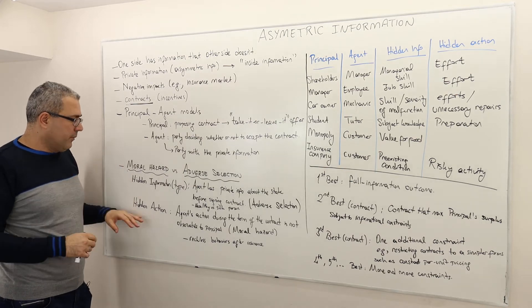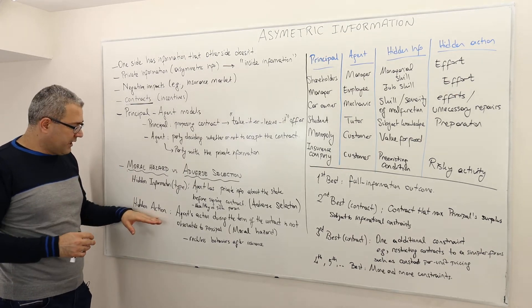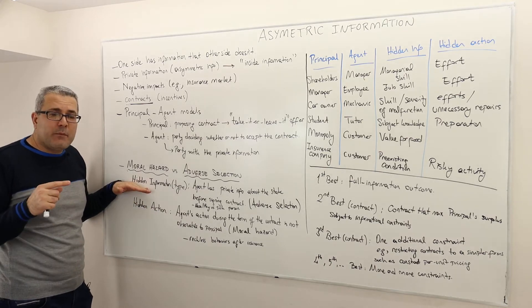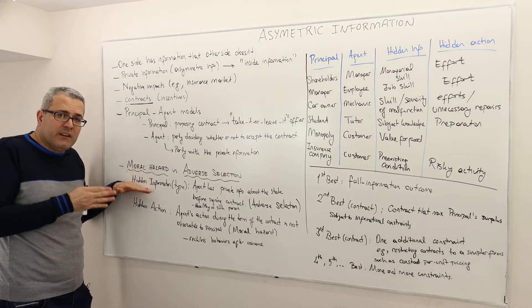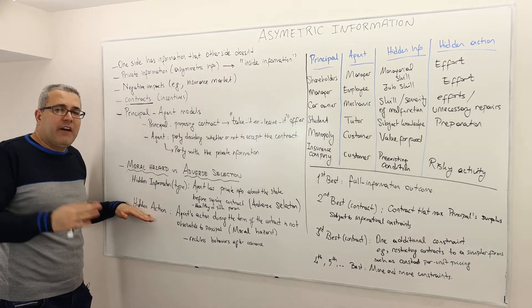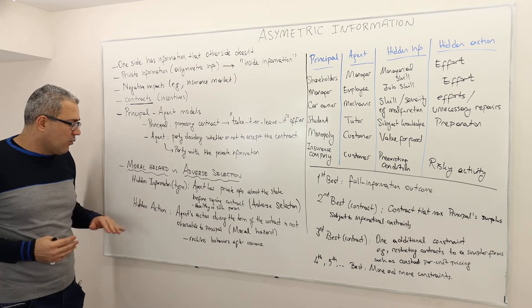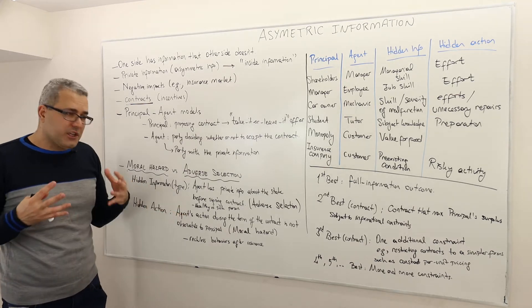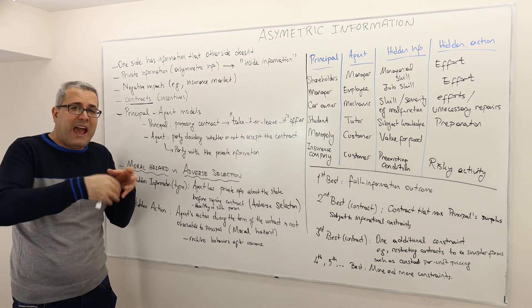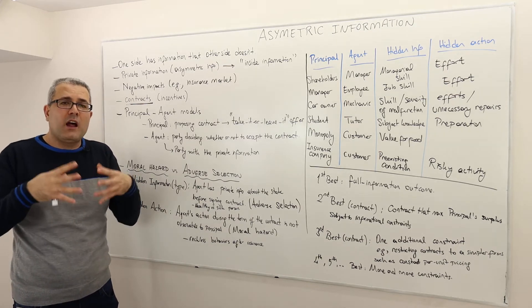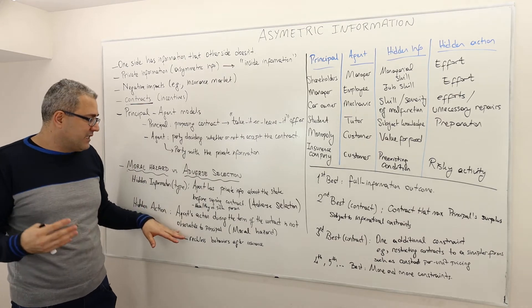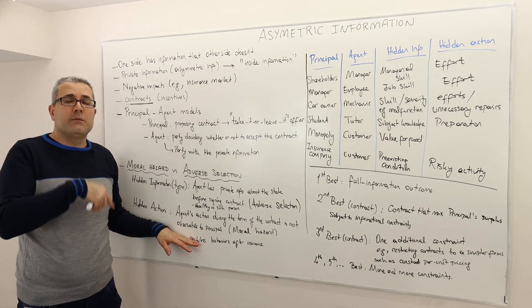Well, the other form of possible scenarios is what's called hidden action. Hidden information is worried about before signing the contract. Hidden action is the situations after signing the contract. Here, in cases of hidden action, agent's action during the term of the contract, meaning after signing the contract and while the contract is in place, the action of the agent is not observable to the principal.